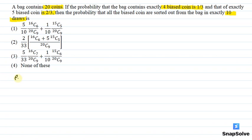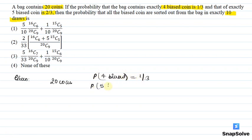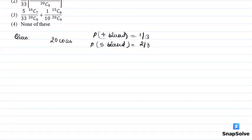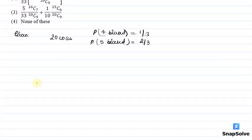तो given है हमें कि एक बाग में 20 coins हैं। 20 coins में से exactly 4 biased होंगे, इसकी probability हमें given है 1/3 के बराबर। और 5 biased होंगे, इसकी probability हमें given है 2/3 के बराबर। तो हमें बताना है कि क्या probability होगी कि exactly 10 draws में हम इन सभी biased coins को बाहर कर सकते हैं।